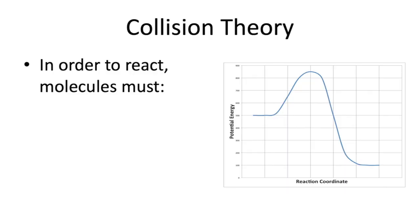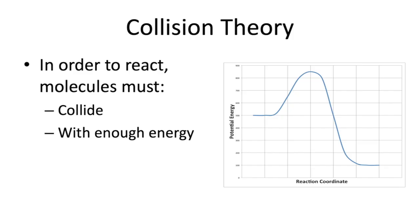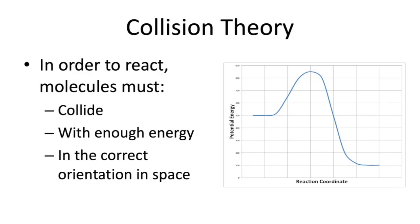Collision theory is an explanatory principle — it helps us explain why we observe the things that we do with regard to reaction rates. For a reaction to happen, molecules have to collide with enough energy and in the correct orientation in space.